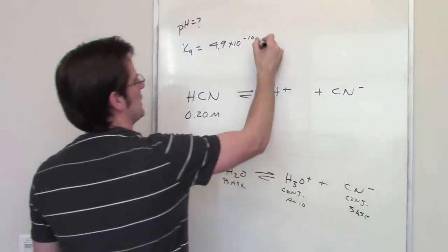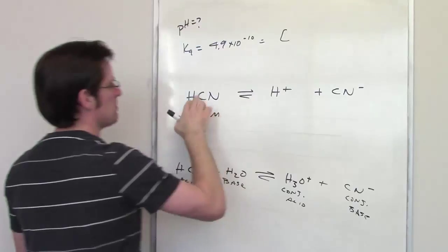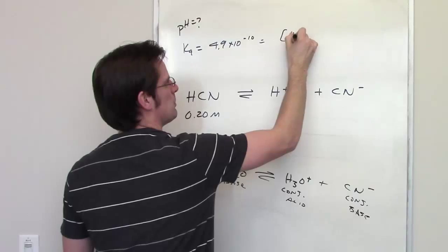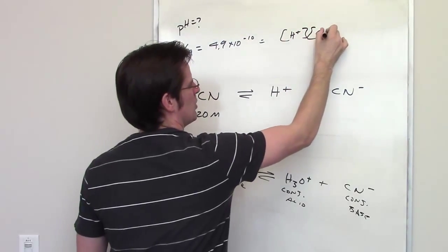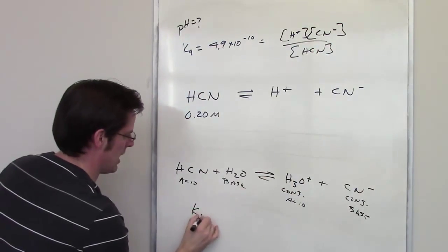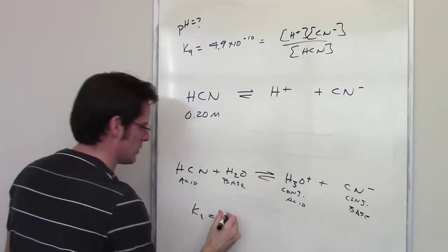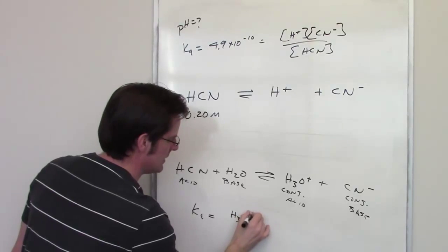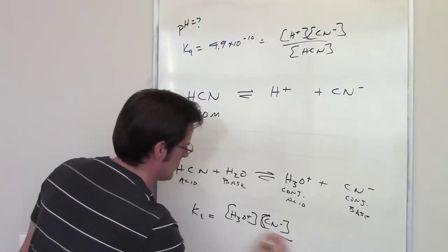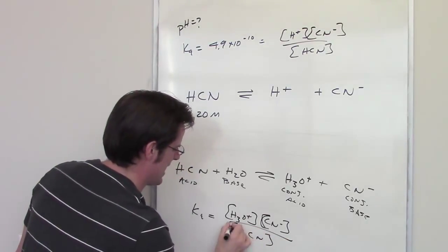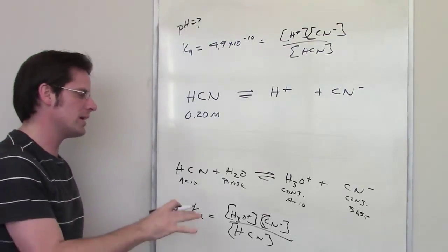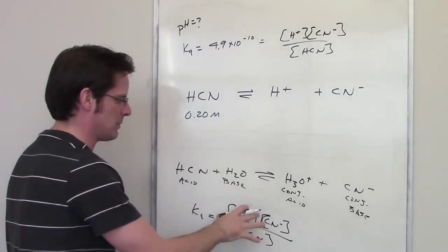So I look at my K-expression. It's going to be H+ concentration multiplied by CN- divided by the concentration of HCN. The K-expression of the thing down here is going to be H3O+ concentration multiplied by the concentration of CN- divided by the concentration of HCN. H2O is omitted because it's a liquid. You don't include liquids or solids in equilibrium constant expressions. They are omitted.